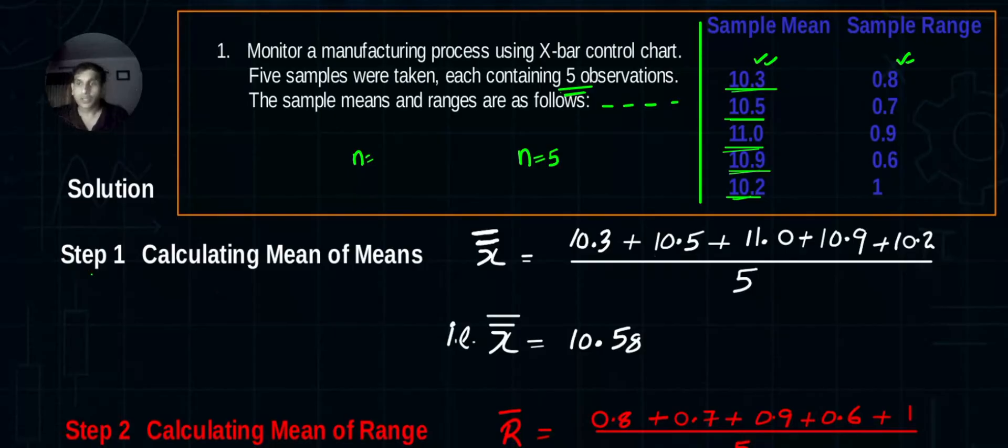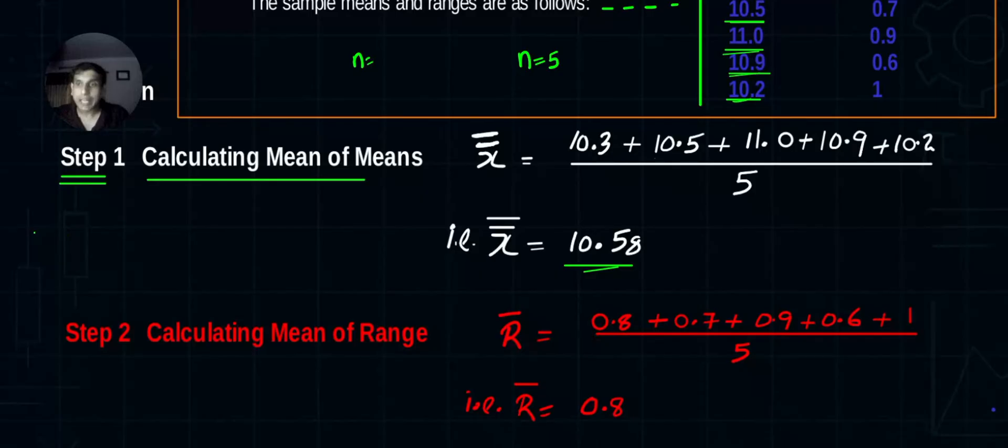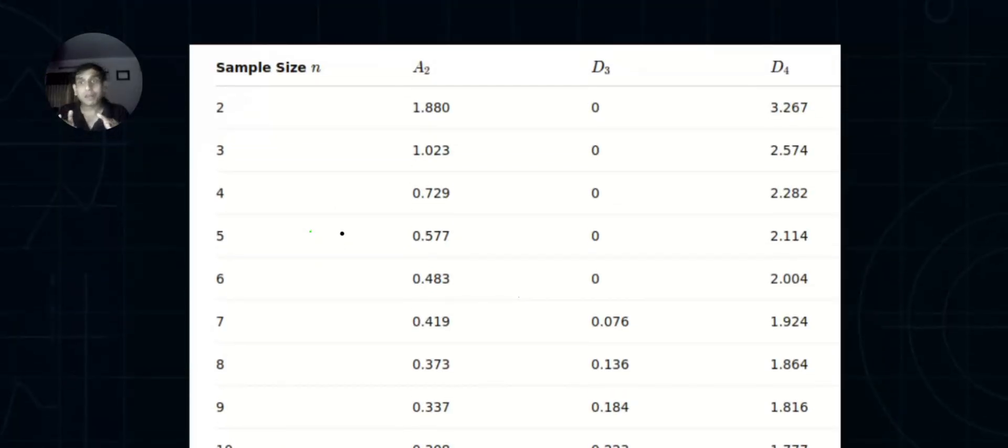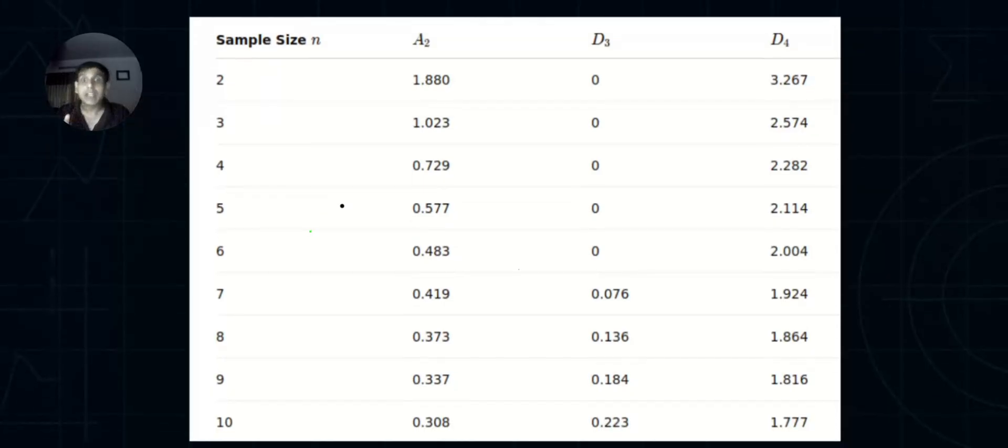Step number one: it will be nice if you note down these steps. Calculate x-double-bar. Add them, divide by 5. I got this value, confirm it. Step number two: I'm planning to create an x-bar chart and r chart. R-bar is given by: add all the r values and divide by 5.